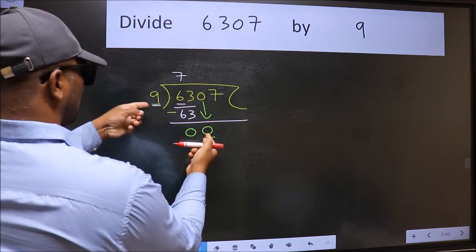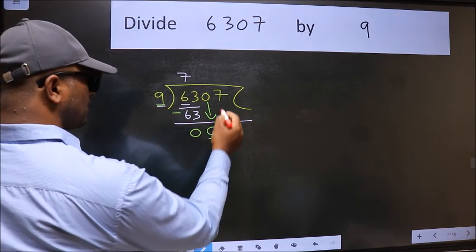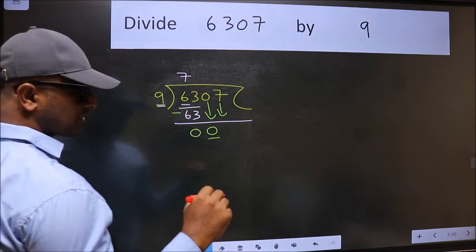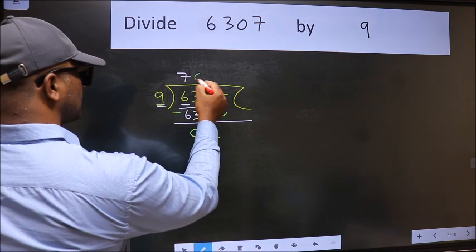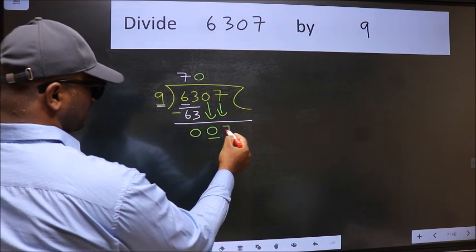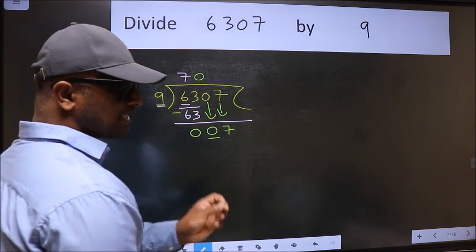Here we have 0 and here 9. 0 is smaller than 9, so we should bring down the second number. And the rule to bring down the second number is we should take 0 here, then only we can bring this number down. After this step, the mistake happens.